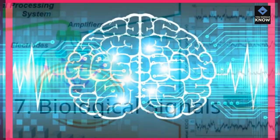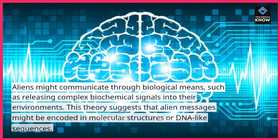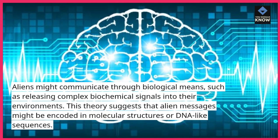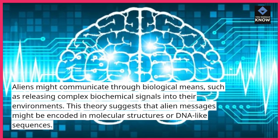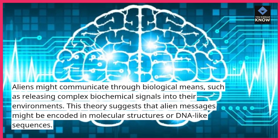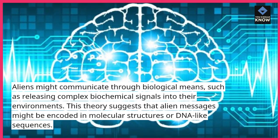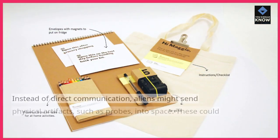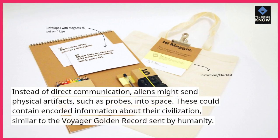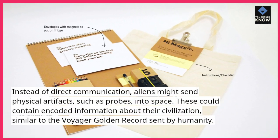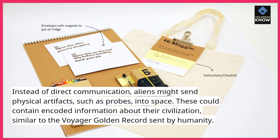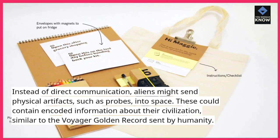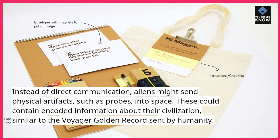Biological Signals: Aliens might communicate through biological means, such as releasing complex biochemical signals into their environments. This theory suggests that alien messages might be encoded in molecular structures or DNA-like sequences. Cultural Artifacts or Probes: Instead of direct communication, aliens might send physical artifacts, such as probes, into space. These could contain encoded information about their civilization, similar to the Voyager Golden Record sent by humanity.